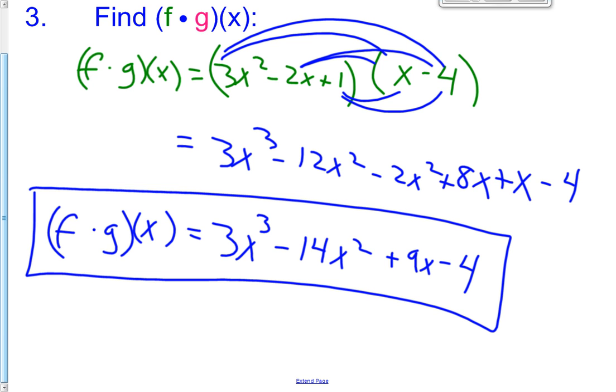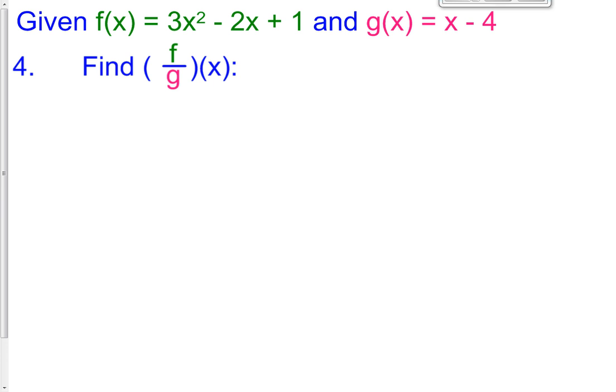That's what happens when you take f times g of x. So we did adding, we did subtracting, we did multiplying, now we're going to do divided. f divided by g of x.